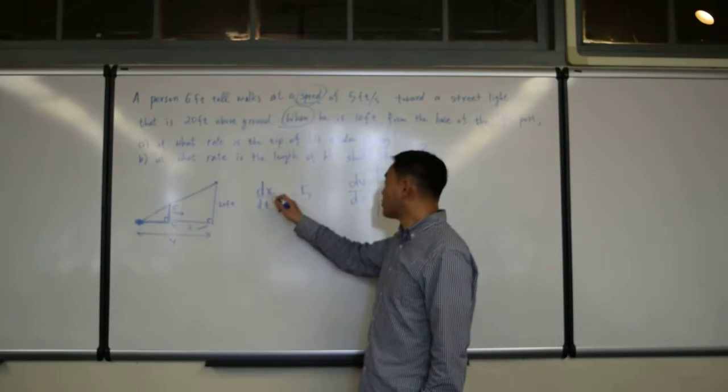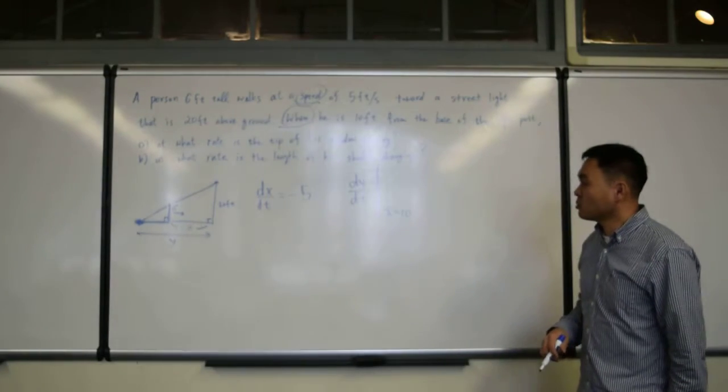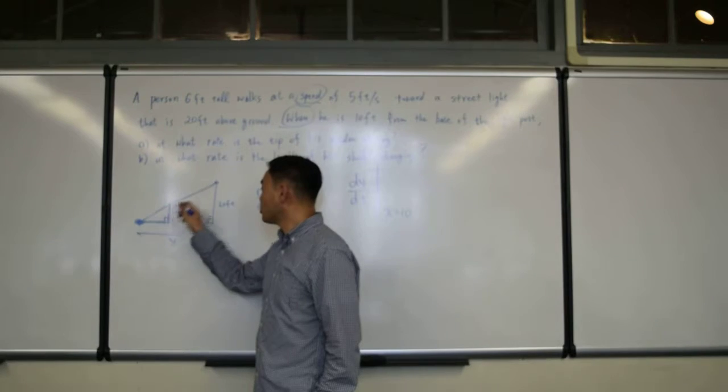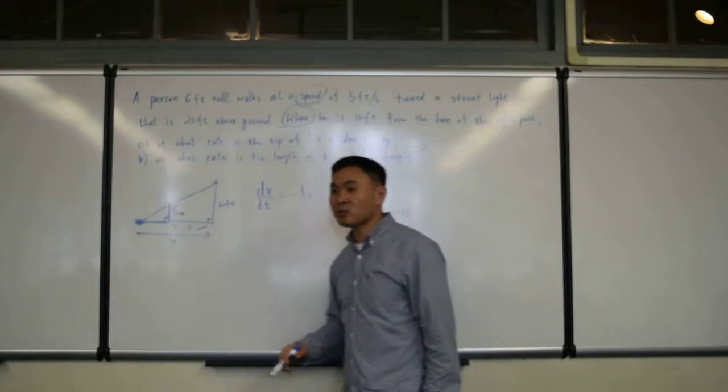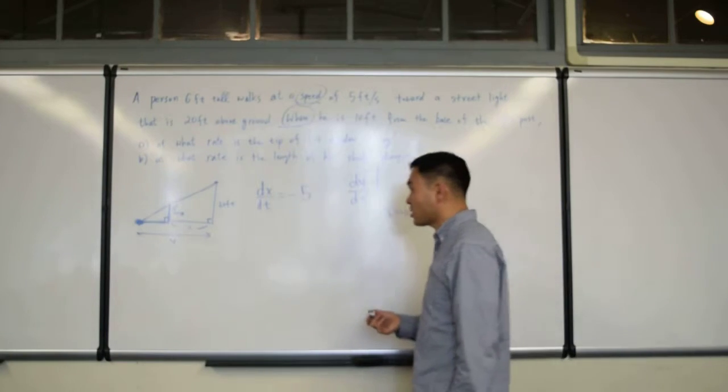Alright, now we have to find the relationship between x and y. Well, how do we do this? Again, we have two right triangles. They're similar. So, you use similarity between the two triangles.